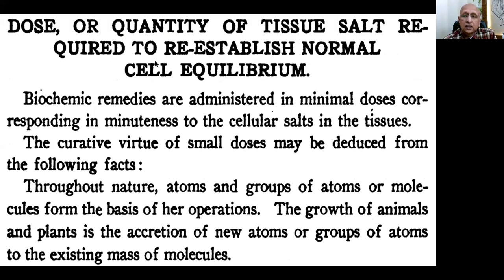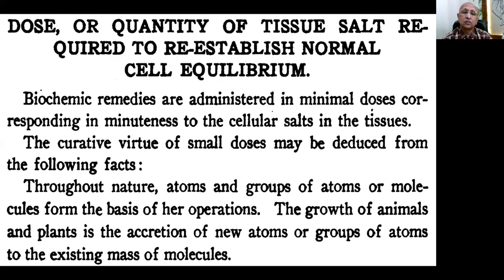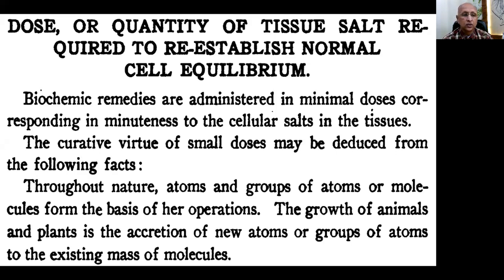So you have learned regarding these three remedies. Today we'll go ahead and first understand the dose aspect, which you have to understand very clearly. Schussler has mentioned this in great detail. The topic is: dose or quantity of tissue salt required to re-establish normal self-equilibrium. He gives the reference for why it is required in minimum quantity and how it works. Biochemical remedies are administered in minimal doses corresponding to the minuteness of the cellular salts in the tissue. The curative virtue of small doses may be derived from the following facts.